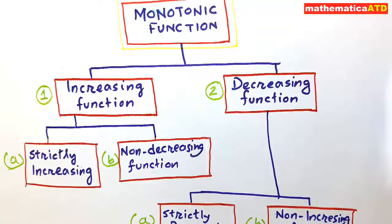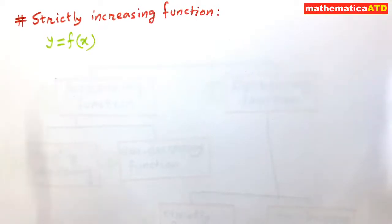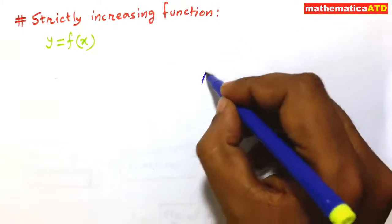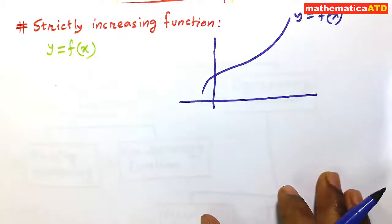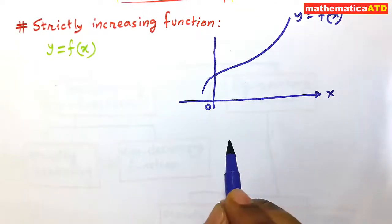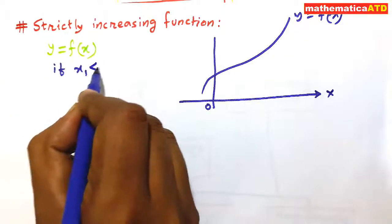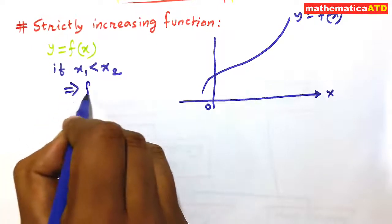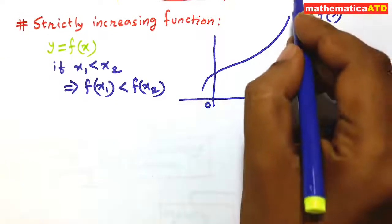We shall start with the first one, that is, increasing function. Let y = f(x) be a real valued function, and we want to draw the curve of this function. Now let us consider that there are two values x1 and x2 in its domain. If x1 is less than x2, and this implies that f(x1) is less than f(x2), then we say that the function f(x) is strictly increasing.